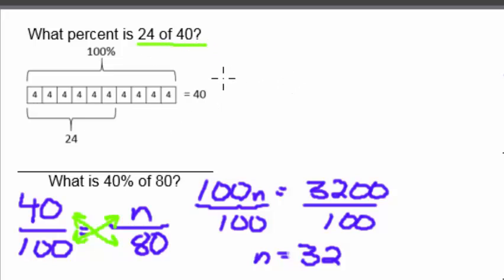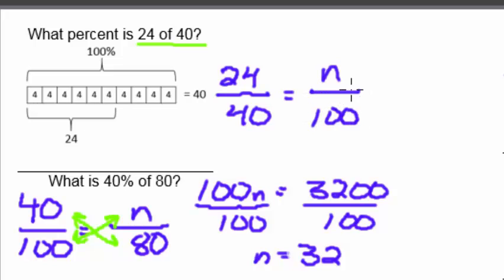To solve this, we set up a proportion. 24 over 40 is equal to some unknown percent, call it n, over 100. If we can solve that proportion, we can solve this problem.